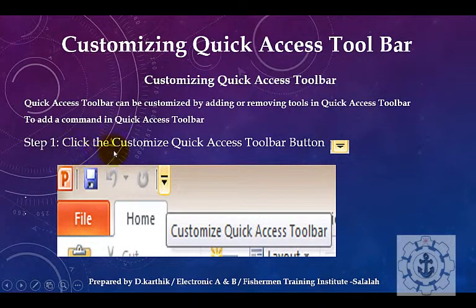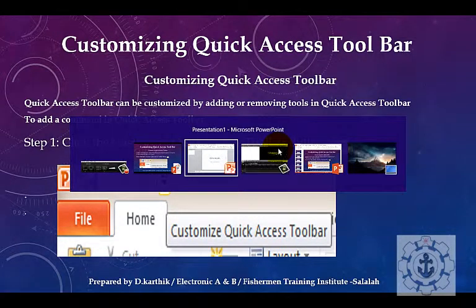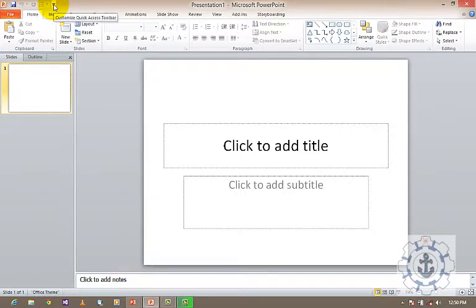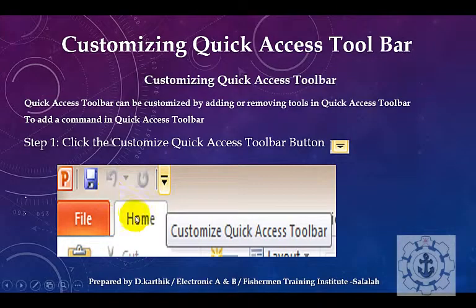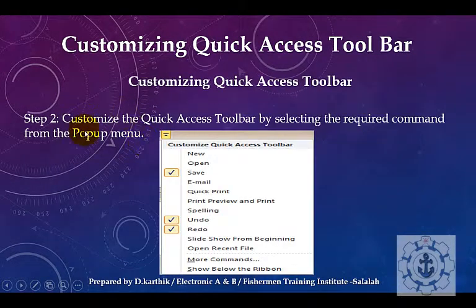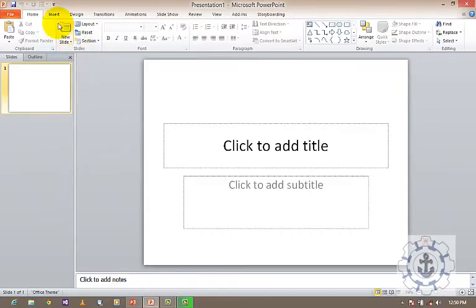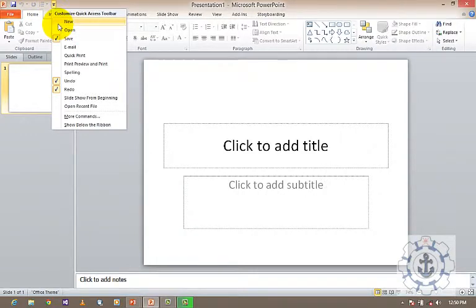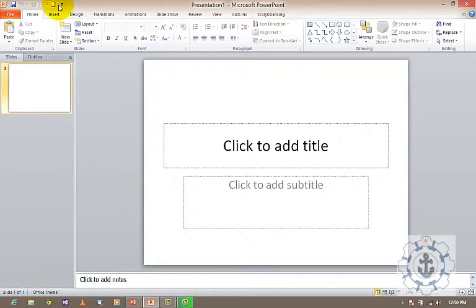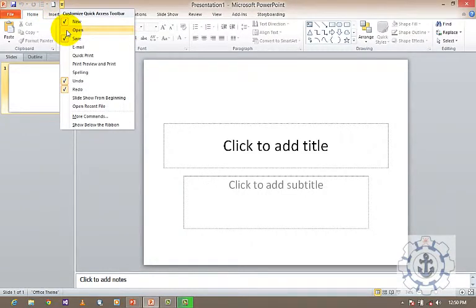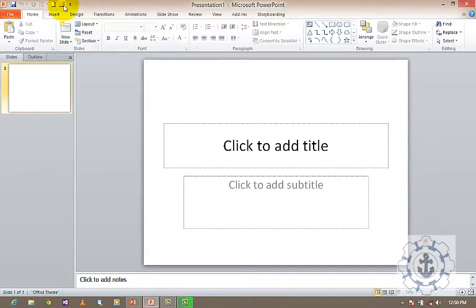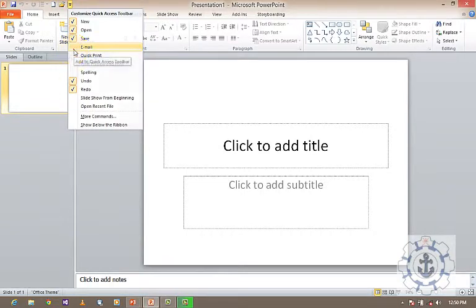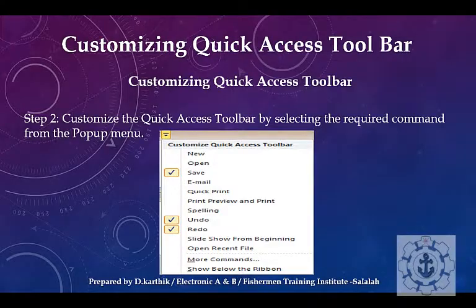Step 1: Click the Customize Quick Access Toolbar button. Here in this presentation you can see a button — this is called the Customize Quick Access Toolbar button. Step 2: Customize the Quick Access Toolbar by selecting the required command from the pop-up menu. For example, if you want to add 'New,' click it and it will be added. If you want to add 'Open,' click Open and it will be added. You can also add 'Email' this way.